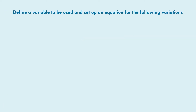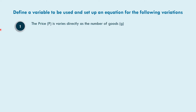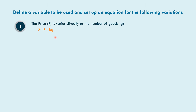Let us define a variable to be used and set up an equation for the following variations. In example number one, the price p varies directly as the number of goods. So the variables are p and g. If we write an equation, p is equal to k times g, where k is the constant of variation.